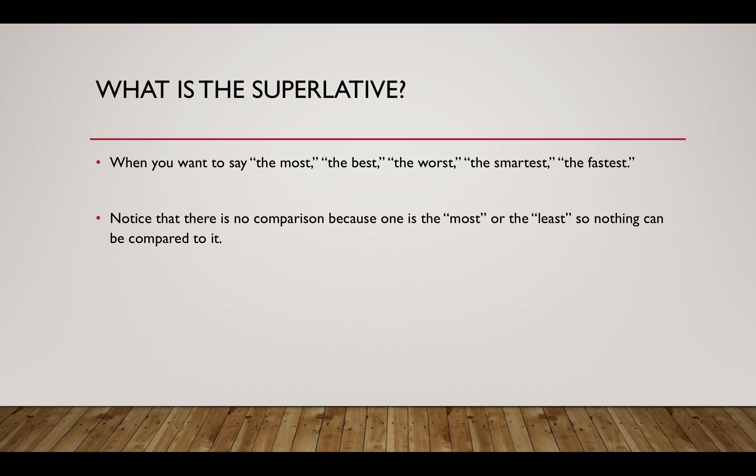You usually learn the comparative with the superlative, but they are quite different. The comparative is when you say 'this water tastes better than this water' or 'this person is taller than that person.' But the superlative has no comparison — it's the best, so 'this person is the best swimmer in the world' or 'these clothes are the pinkest I could find.' There's no comparison.